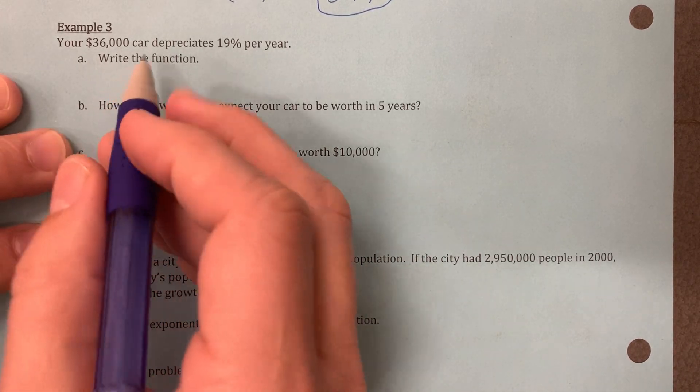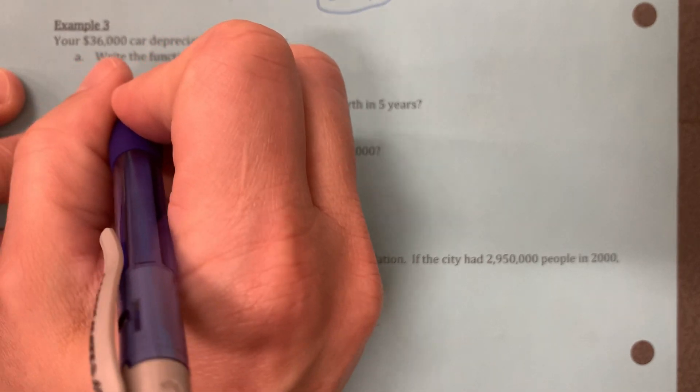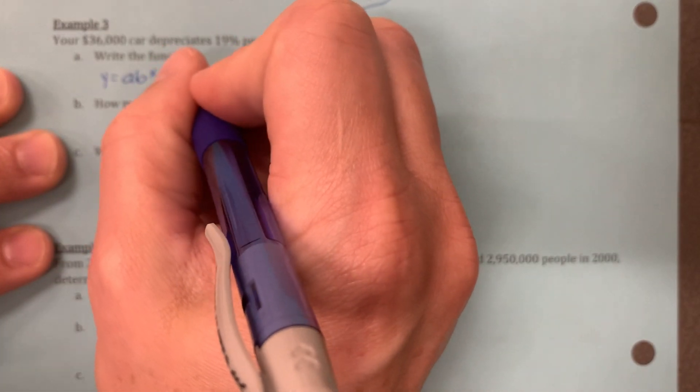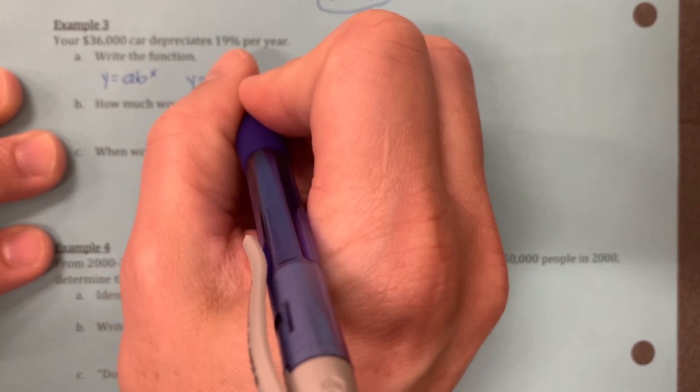Example 3, writing the function y equals a b to the x power. A is the initial amount, which in this case is 36,000.